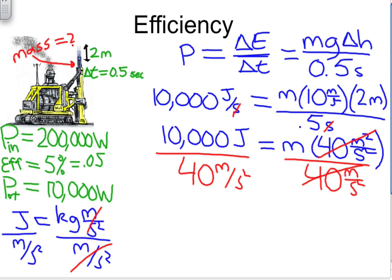10,000 divided by 40 is 250. A joule divided by a meter per second squared is a kilogram. We now know the mass of the rod.